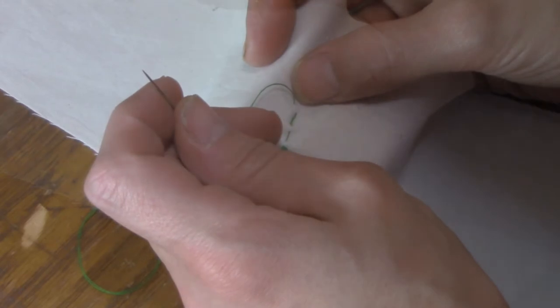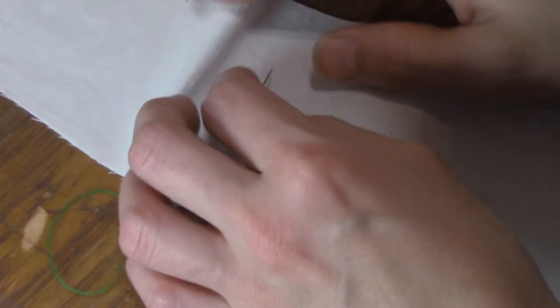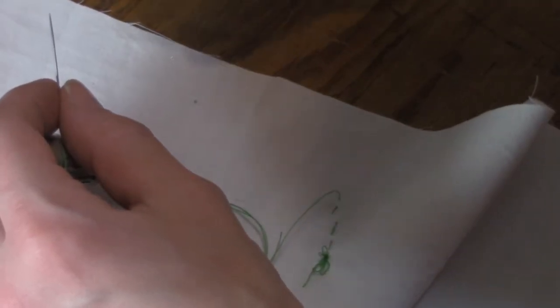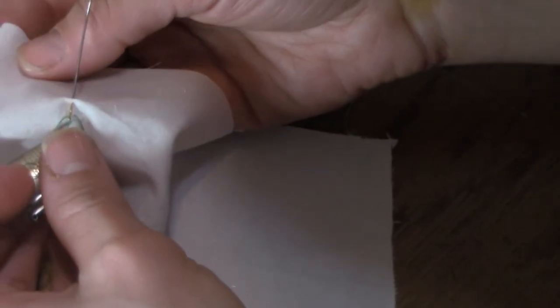But in trying to learn how to use a thimble properly, I came across a rather interesting thing. Everyone tells you certain things but nobody's telling us what to do after the needle's got through the fabric. Once the needle's through, now what do you do? How do you hold the needle?